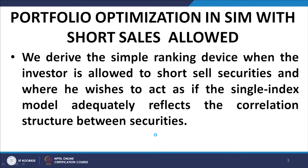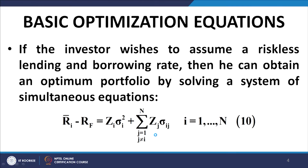We derive the simple ranking device and shall explore two situations: firstly when short sales in the securities are allowed, and secondly when short sales are not allowed. We will illustrate them with examples. Let us first take the situation where short sales are allowed, which is rather simple. We derive the simple ranking device when the investor is allowed to short sell securities, acting as if the single index model adequately reflects the correlation structure between securities.